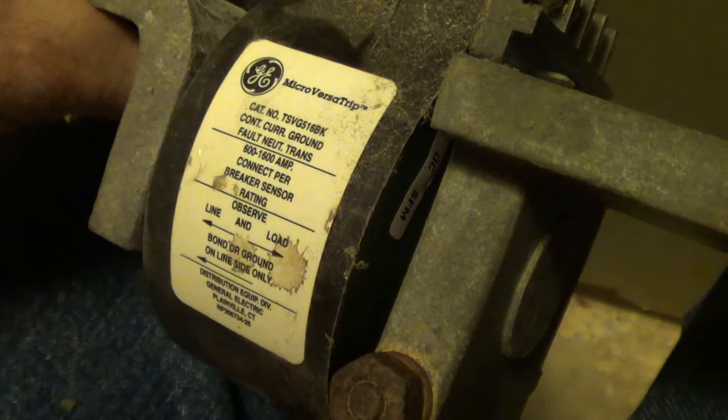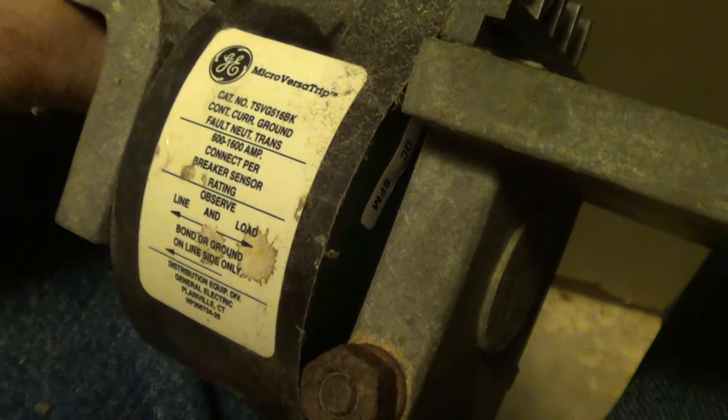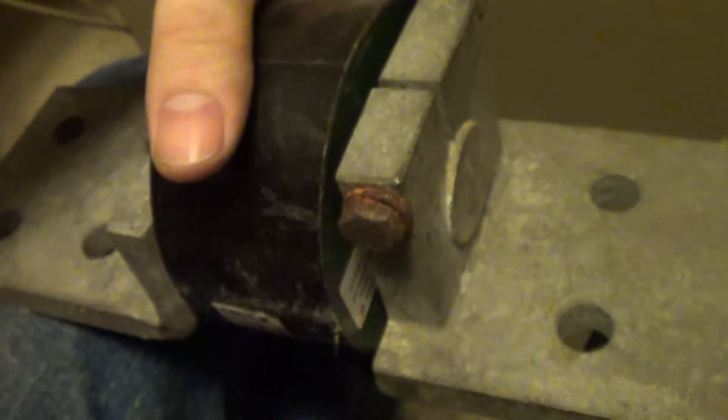Here's a General Electric current transformer. It's cataloged TSVG516BK and this has got a big old donut here.